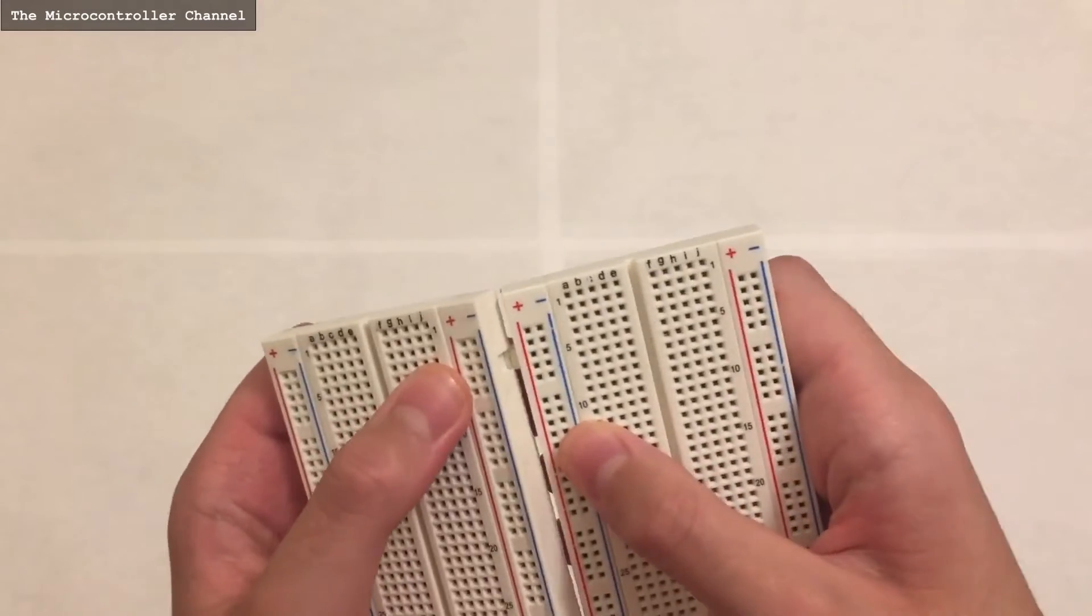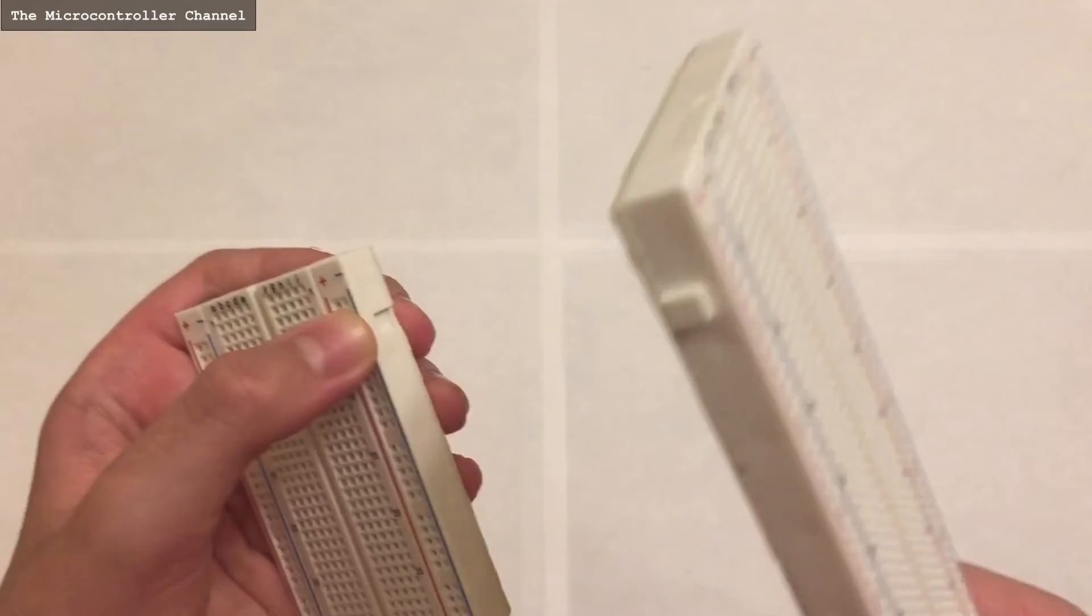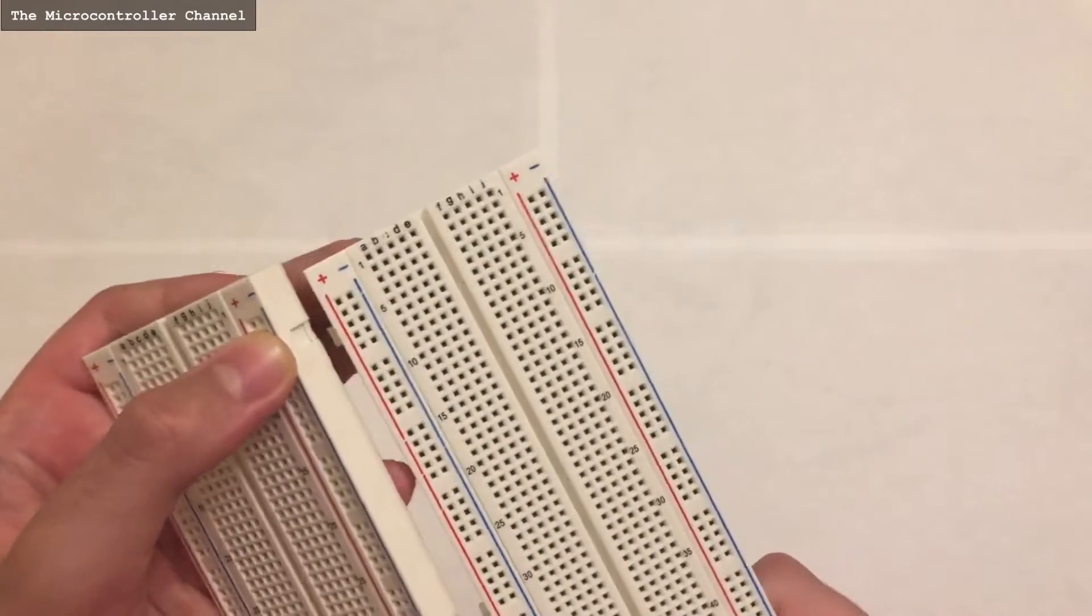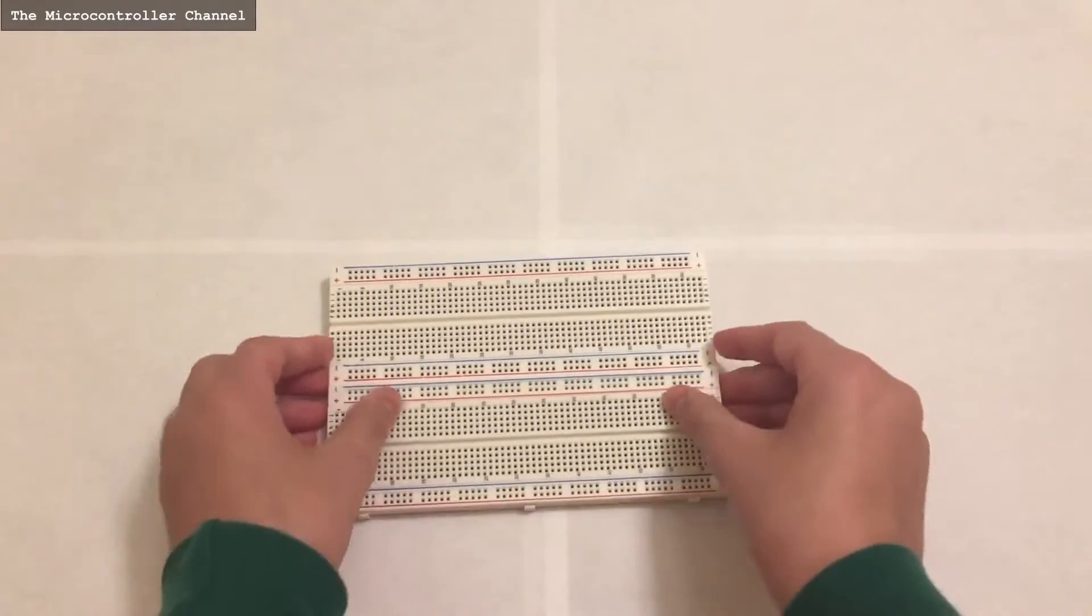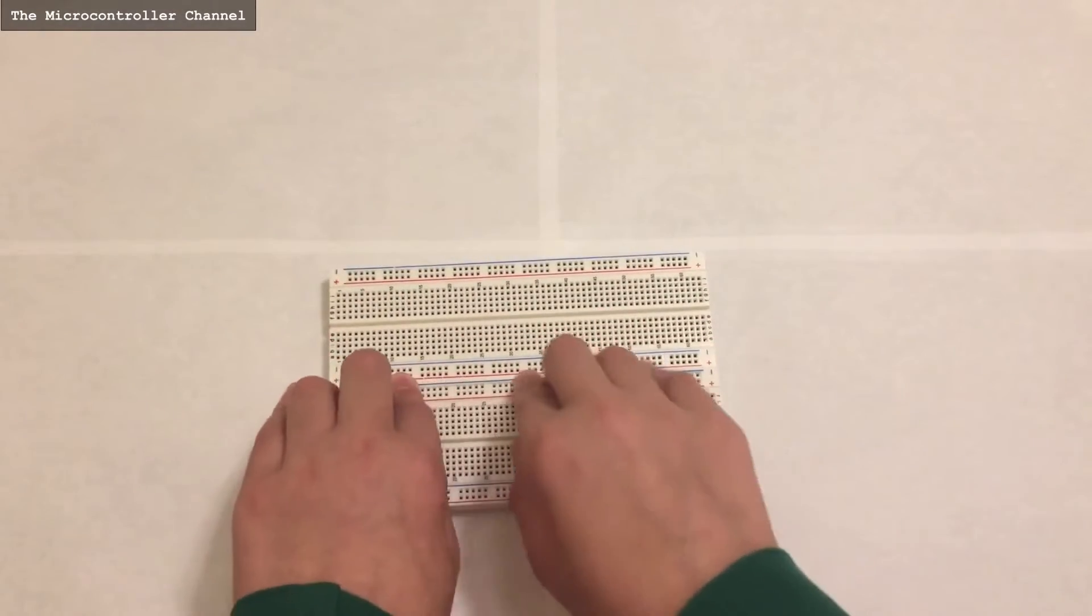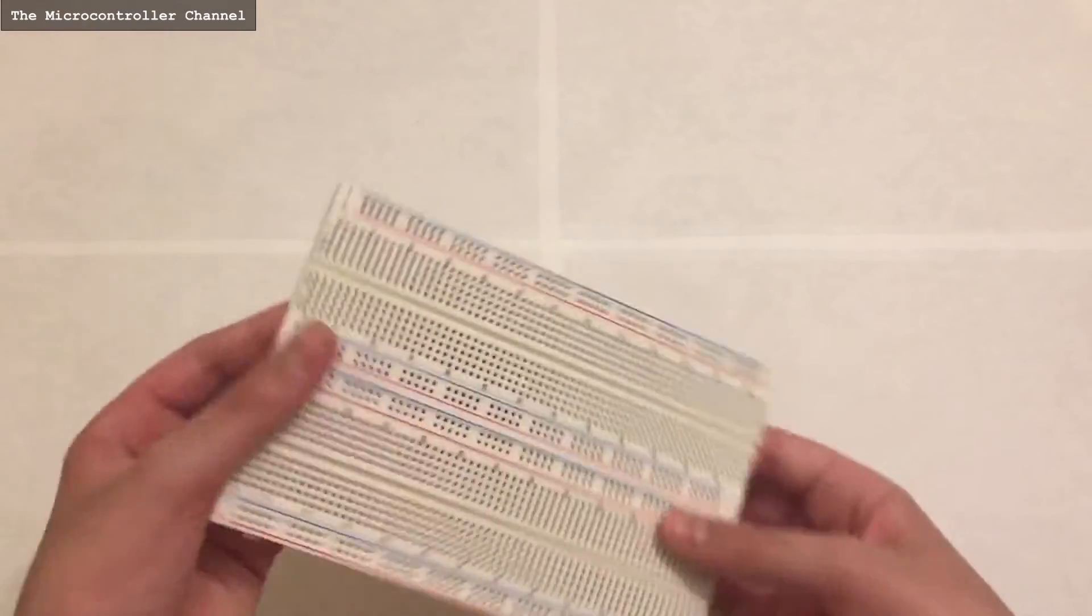You will have to take one breadboard and put it under the other breadboard and slide the square ridges that are jutting out into the square holes on the other breadboard. And this way they will slide into each other and they will be in a tight lock.